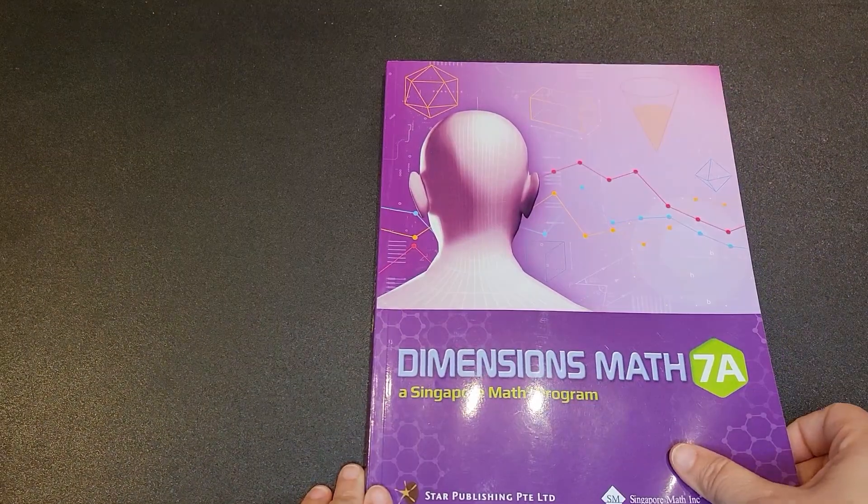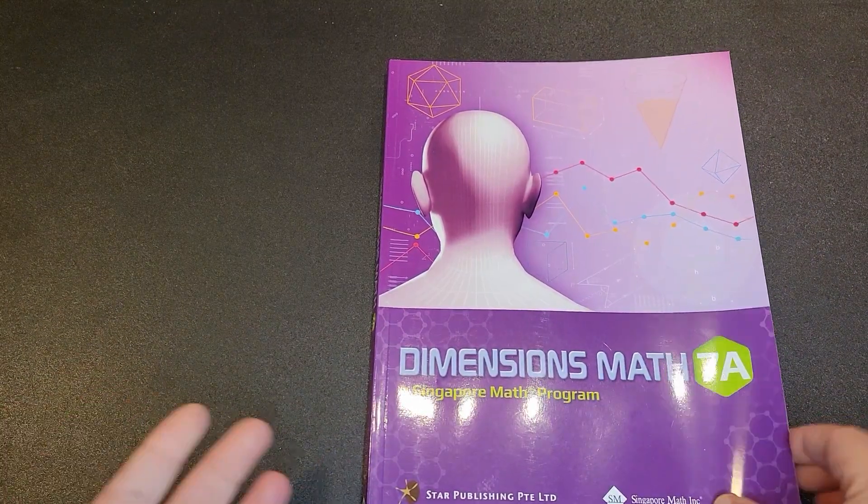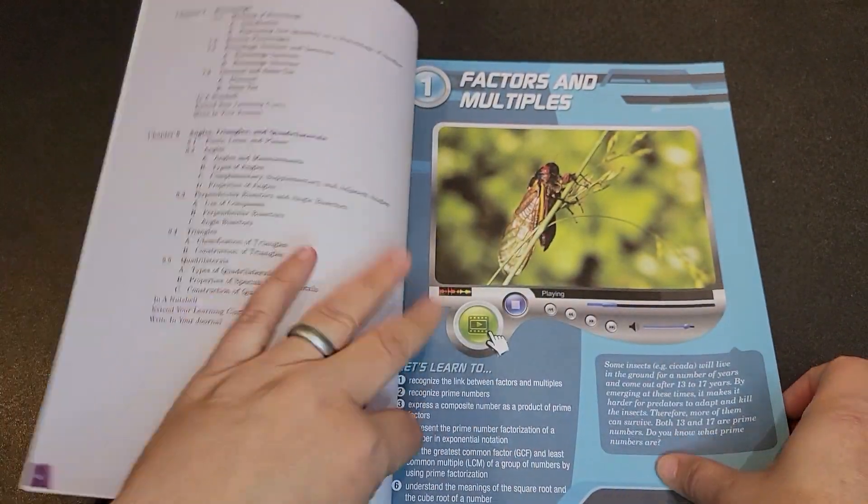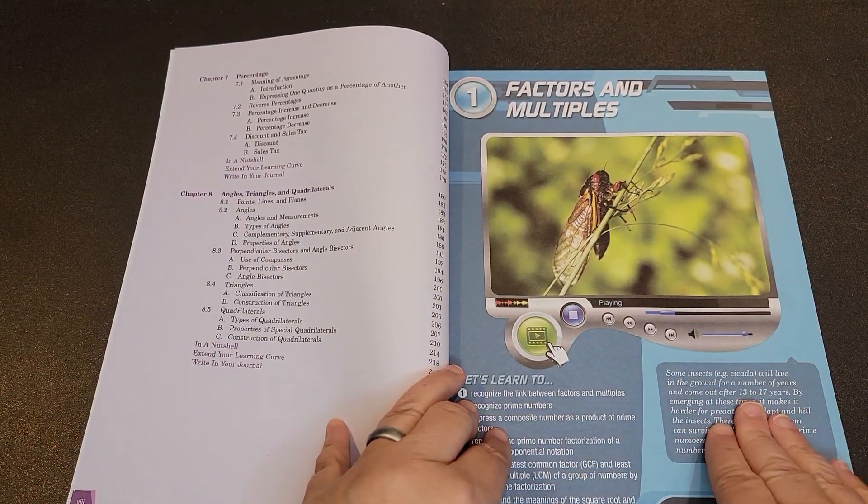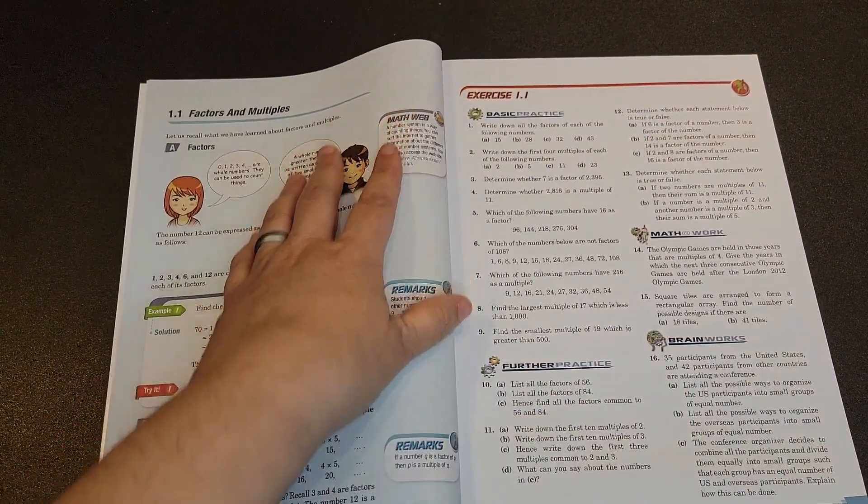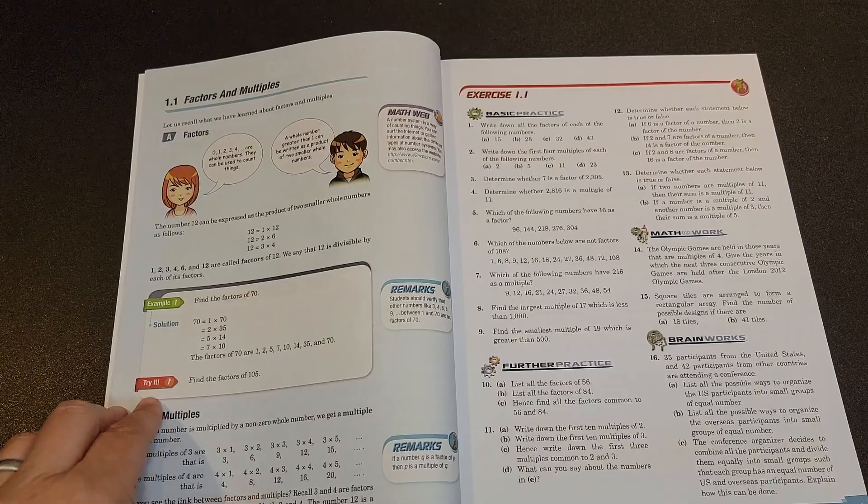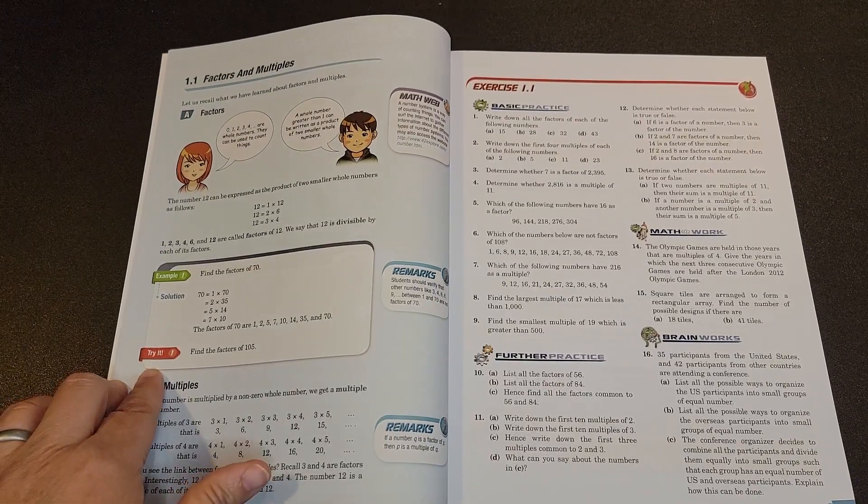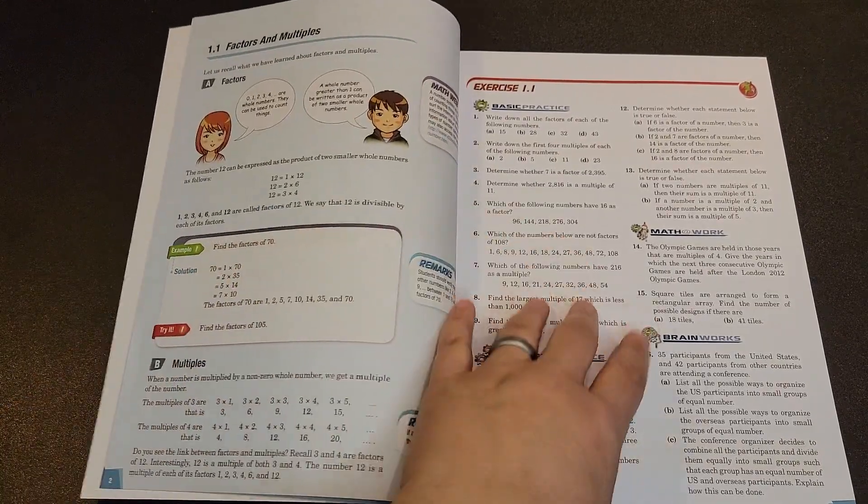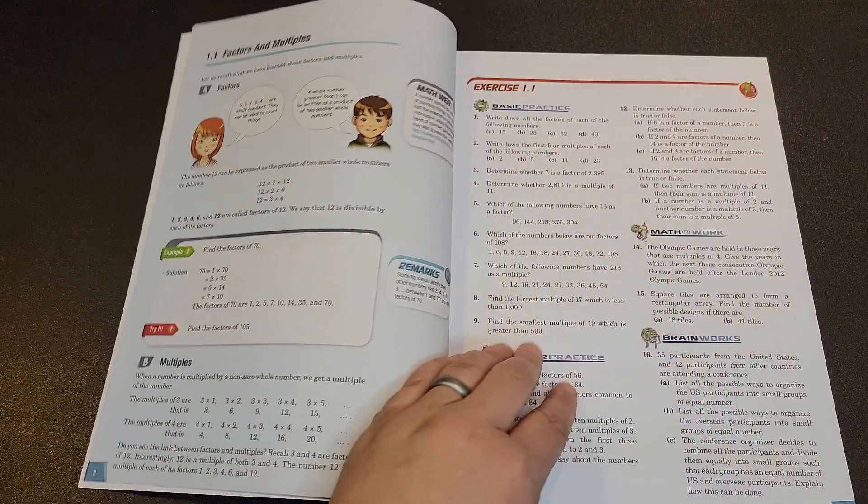When you look at the individual lessons, you will see that they're very similar to what you have seen in the past. So you start with basically, why is this important? And then you have your lesson. You see that there's the example one and try it one, which is exactly what you would have seen in Dimensions 6. Then you have these exercises.